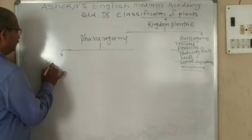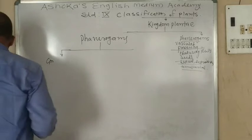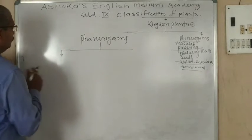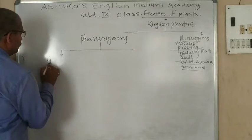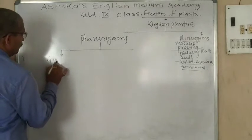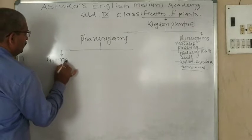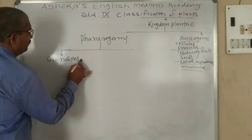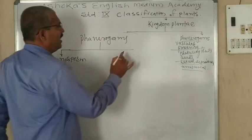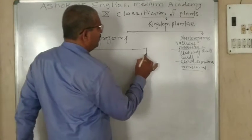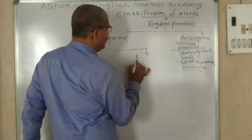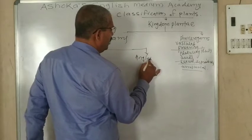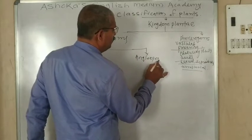Phanerogamae is divided into two parts: Gymnosperm and Angiosperm.